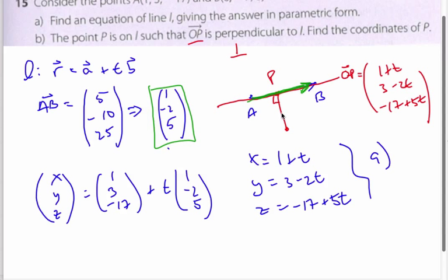that happens when my dot product, so AB dot OP, when that equals 0, I get perpendicular lines, or perpendicular vectors.